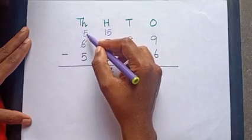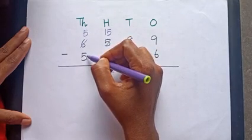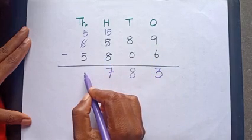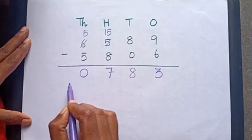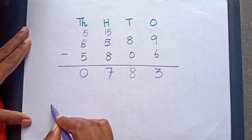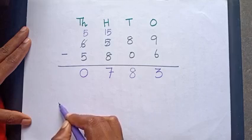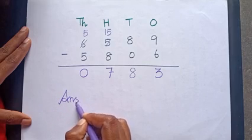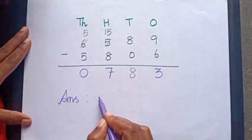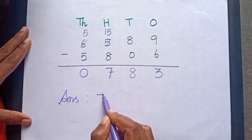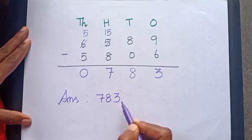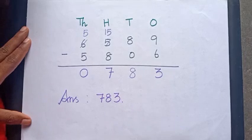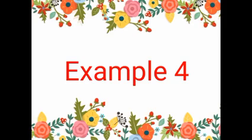5 minus 5 is equal to? How much? Yes, very good, 0. Therefore, the answer is 783. Let us see the next example.